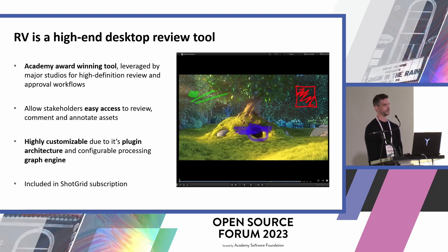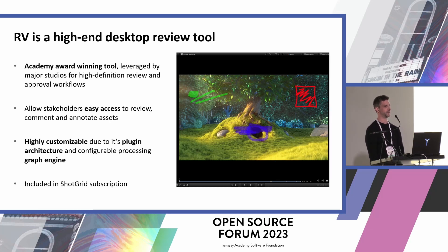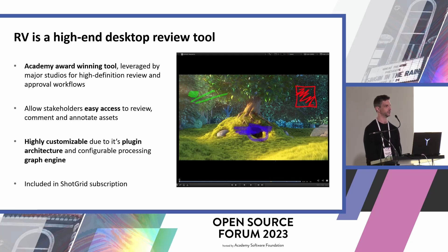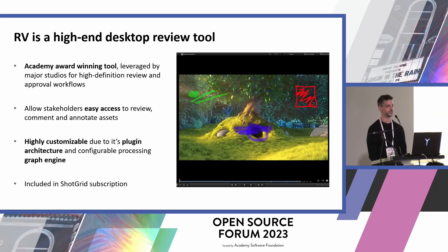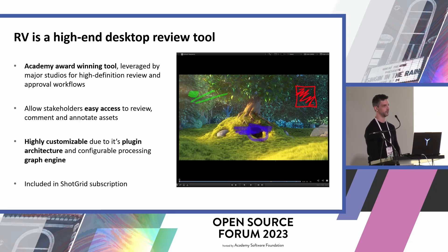RV was acquired by Autodesk in 2015, roughly six months after the acquisition of Shotgun. It's a high-performance image and sequence playback tool. It offers accurate color representation, large file support such as OpenEXR, and guaranteed playback rate at high resolution, as well as local media access. It's mostly used in post-production dailies for review and approval workflows with supervisors and executives. Its plug-in architecture and powerful, configurable graph engine allows studios to evolve and adapt the tools to their pipeline — really the key feature that made it very interesting for us to open source as part of the OpenReview Initiative.